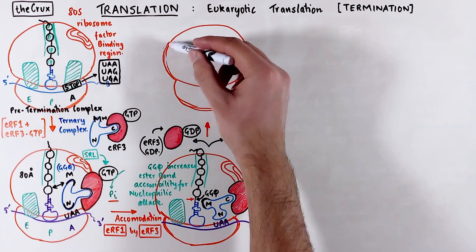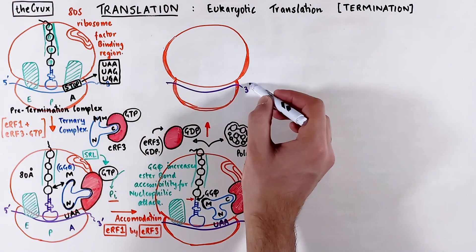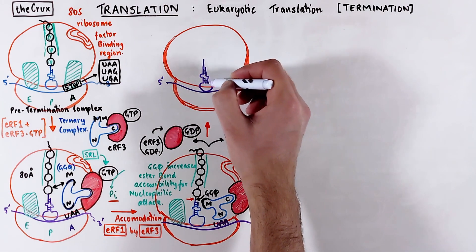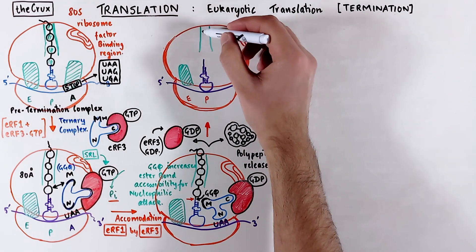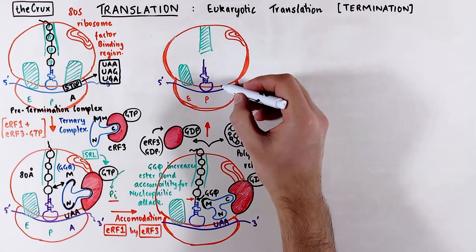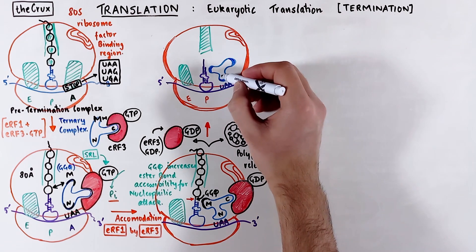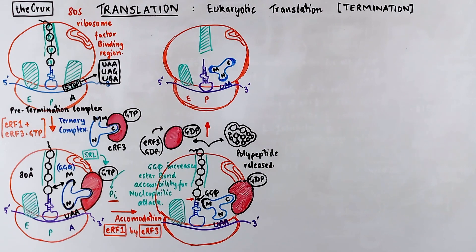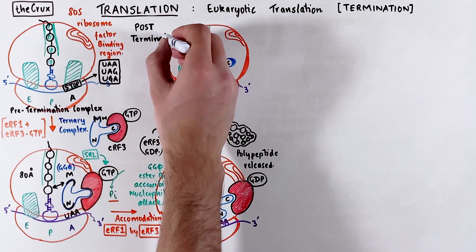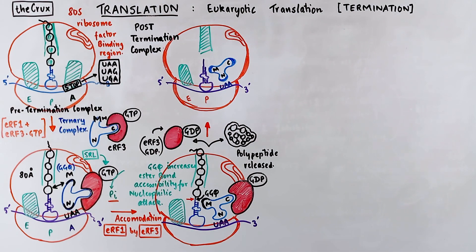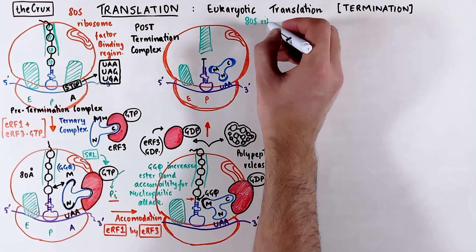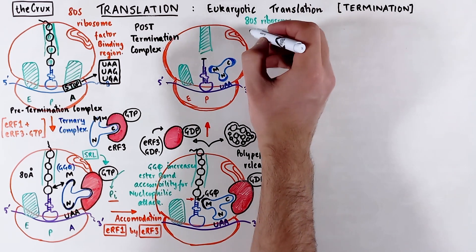Now we can sketch out the resulting ADS ribosome. The P site tRNA has no polypeptide attached to it, which means the protein exit channel is free. Because release factor 3 is gone, release factor 1 is alone at the A site, still paired with the stop codon. This ATS ribosome complex, where the polypeptide is released from the ribosome, is called the post-termination complex. Because there is no polypeptide at the tRNA, translation — protein synthesis — is technically finished at this step. The only thing left to do is to split the ATS ribosome into subunits.